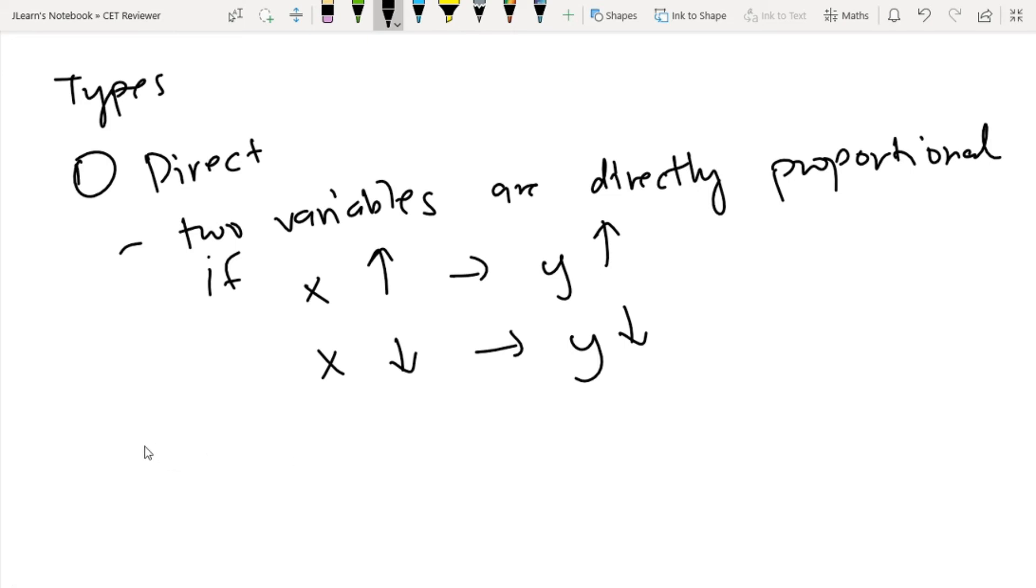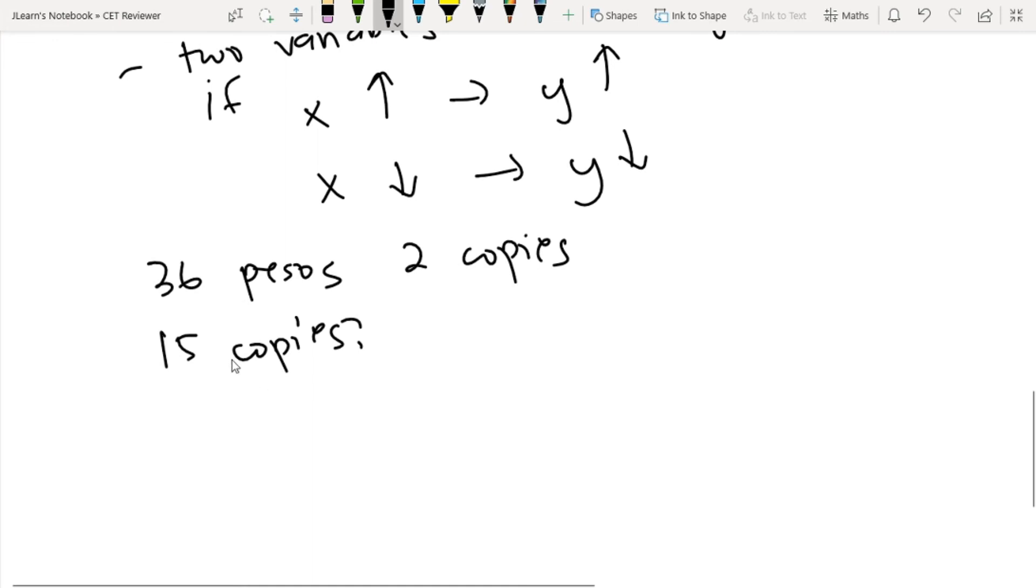For example, let's say a newspaper is 36 pesos for two copies. How much for 15 copies? As you know, the price of the newspaper doesn't change no matter how many you buy. You have a direct proportion. So you can say 36 pesos over two copies equals some pesos over 15 copies.